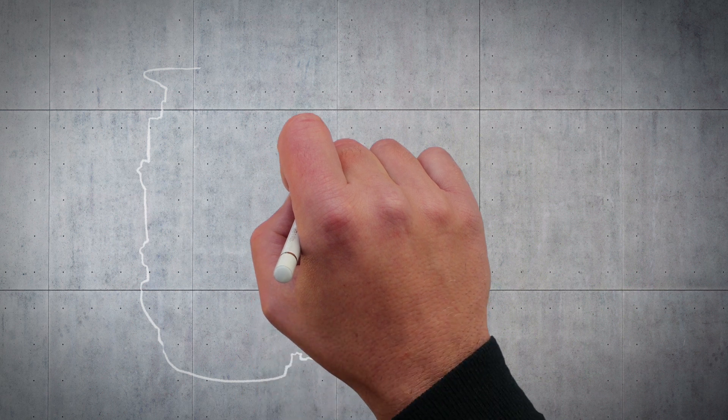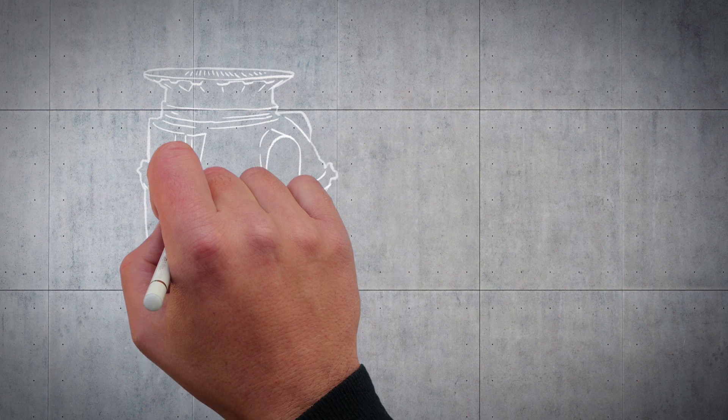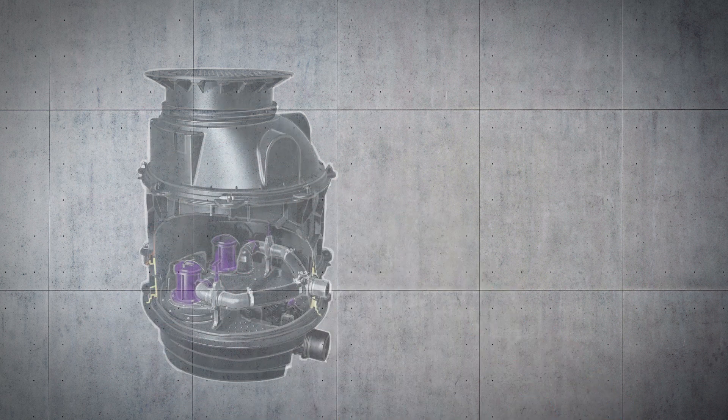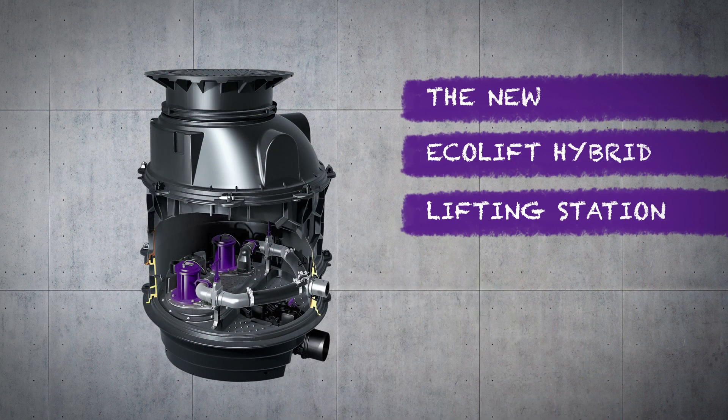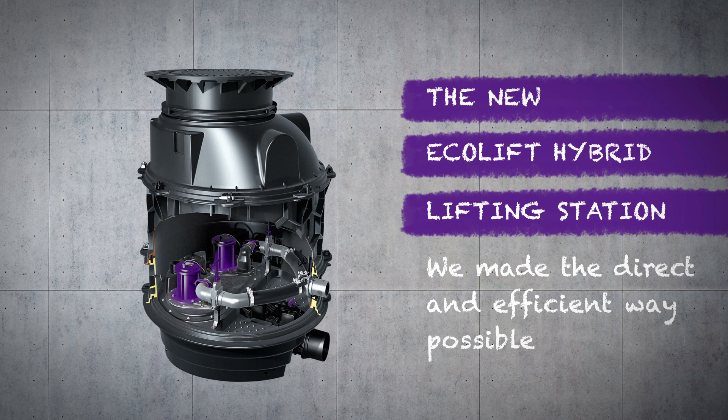Kessel has been offering new and direct drainage solutions for decades. Now we have developed a new type of drainage solution, the Ecolift XL Hybrid Lifting Station. Why a hybrid lifting station? Because these new systems offer previously unavailable advantages to the operator.